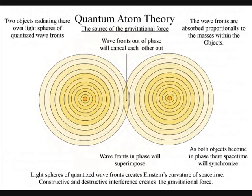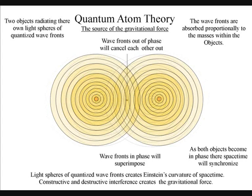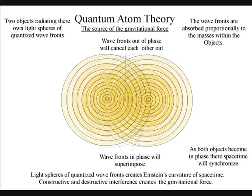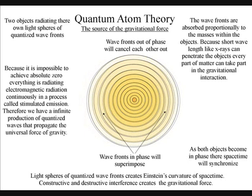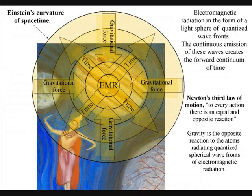When the wave-fronts of two spheres come in contact, we will have destructive interference, and the wave-fronts out of phase will cancel each other out. There will also be constructive interference between the wave-fronts that are in phase, and they will superimpose. The radiant energy will be entirely absorbed proportionally to the masses within the objects. This will cause an unbalanced force, and the two objects will resonate together, in a process known as gravity.